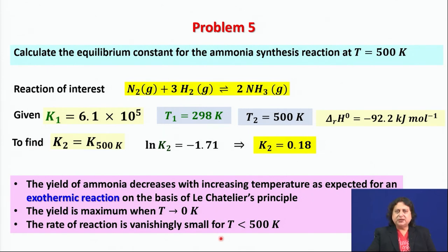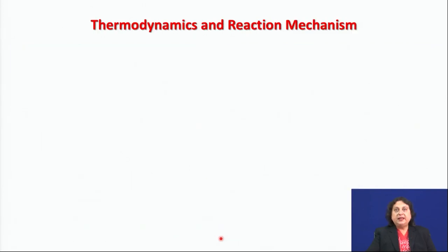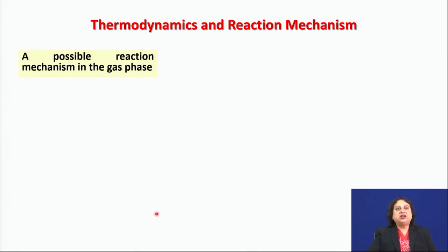Ammonia is critically important as it is the source of large-scale manufacturing of all types of fertilizers in modern agriculture. So, is there another way? The key question is: why, even if thermodynamics predicts a reaction to be viable, do we not get the product? This is where the relationship between thermodynamics and reaction mechanism comes into picture.